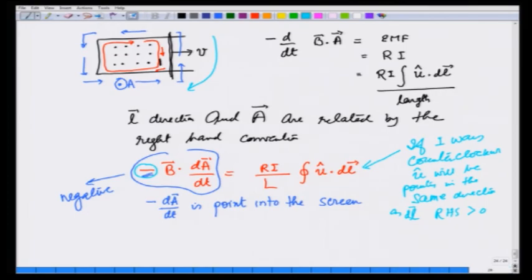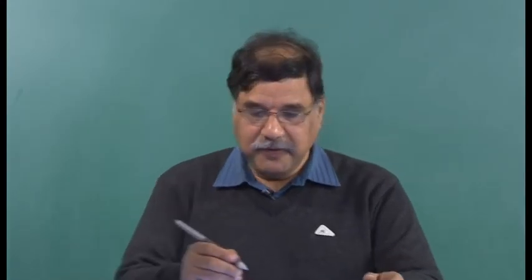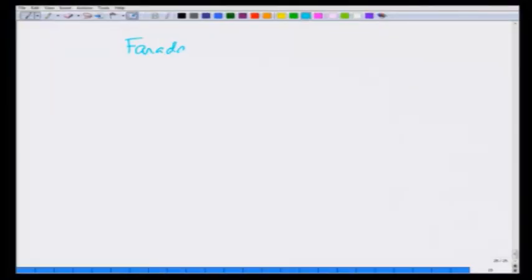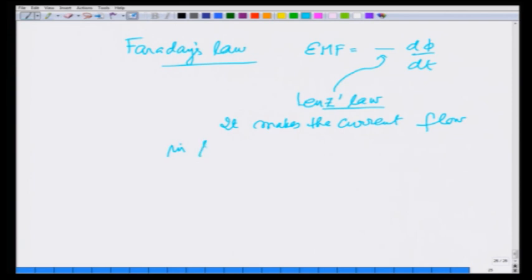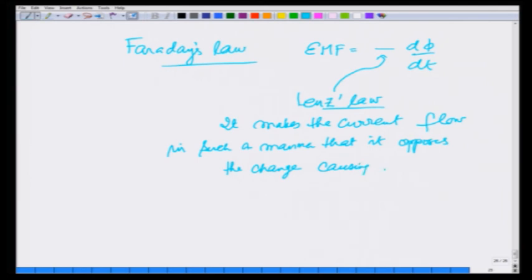So what we have covered in this lecture is that change in flux, by Faraday's law, gives an EMF = −dΦ/dt, and this minus sign is there to express Lenz's law — its mathematical effect is that it makes the current flow in such a manner that it opposes the change causing it. In the next lecture we will be turning Faraday's law into terms of fields.